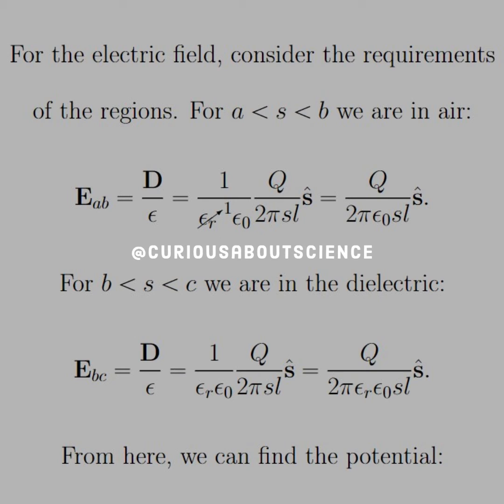So for the electric field, consider the requirements for the different regions. For A to B, we are in air, right? So our dielectric constant will therefore be 1, and we can see that it cancels to 1 in our simplification here. And we're left with the electric field in A to B is equal to Q over 2 pi epsilon naught S L in the S-hat direction.